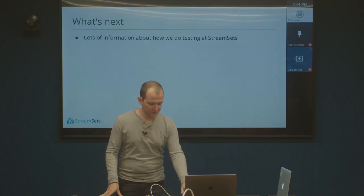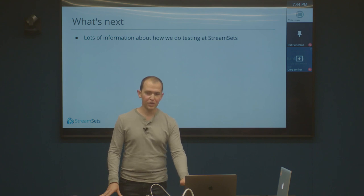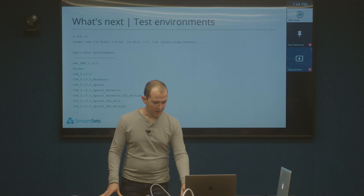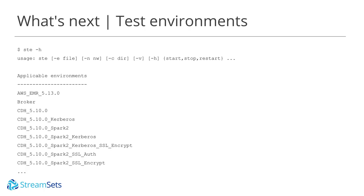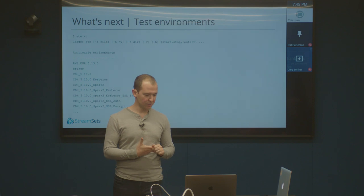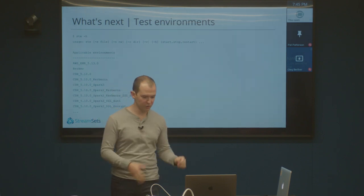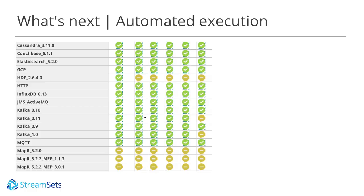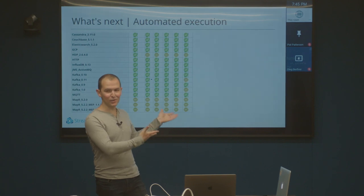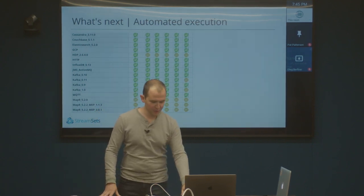So what's next? We have a lot more information that's going to be made publicly available about how we do testing at StreamSets. One is test environments — I just sort of took for granted that we have databases that we can start up. Pat mentioned specifically that we have the ability to start up CDH clusters, Hortonworks clusters, MapR clusters, all kinds of databases, and all kinds of other fun stuff. We have tooling that we've written to do this really quickly in Docker on single machines, and we will actually release that publicly in the not too distant future as something called STE — StreamSets Test Environments. Other things we're going to talk about: we're going to actually talk about the automated Jenkins execution that we run on a nightly basis. If you're curious about whether StreamSets actually tests the stuff they claim to support — well, we test it. You see there are cells that are yellow, so we know there are bugs in our code. But knowing is a good thing.